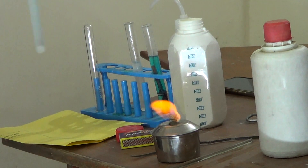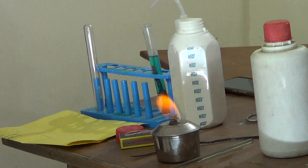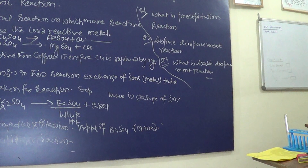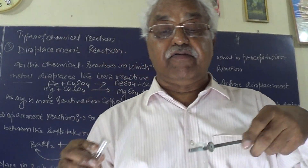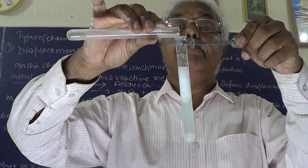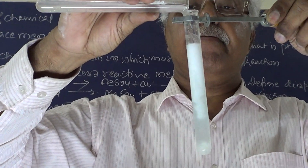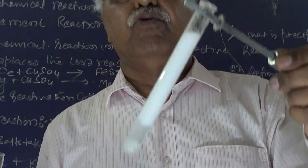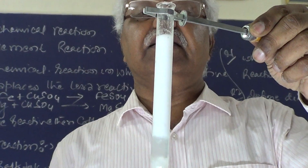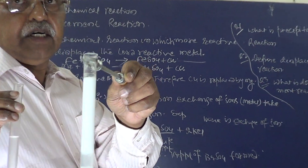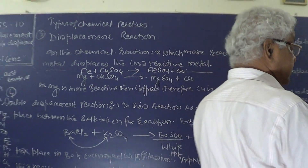This solution has been made. Now we can see two solutions: one is potassium sulfate solution, one is barium chloride. Barium chloride and potassium sulfate — you can see both of them.